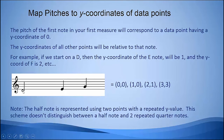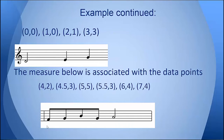The y-coordinate of the very first note will always be 0, and all of the other y-coordinates will be relative to that note. For example, if we start on a D — which is what this note is in the treble clef — then the y-coordinate of the E note will be 1, the y-coordinate of an F would be 2, and G is 3. The half note is represented using two points with a repeated y-value. This scheme doesn't distinguish between a half note and two repeated quarter notes — that's a limitation of the model that students might find a different way of working around. In this particular example, we have (0, 0) for the half note, (1, 0) for the second half of that half note, then (2, 1), (3, 3). The second measure will be (4, 2), (4.5, 3), (5, 5), (5.5, 3), (6, 4), and (7, 4).